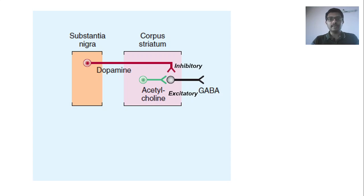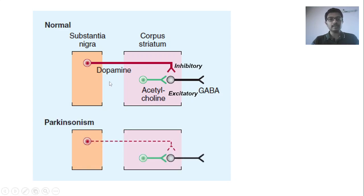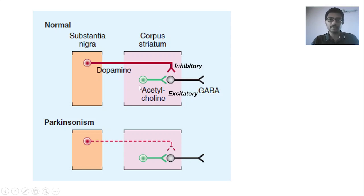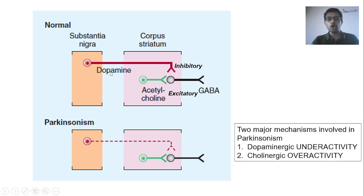In Parkinson's disease, there is degeneration of the nigrostriatal pathway neurons — the neurons projecting from substantia nigra to corpus striatum that synthesize and secrete dopamine. Those neurons degenerate and as a result, dopamine levels are decreased. If this inhibitory impact is reduced, as compensation, there is more excitatory impact of acetylcholine. In Parkinson's disease, there are two major mechanisms at play: dopaminergic underactivity and cholinergic overactivity.